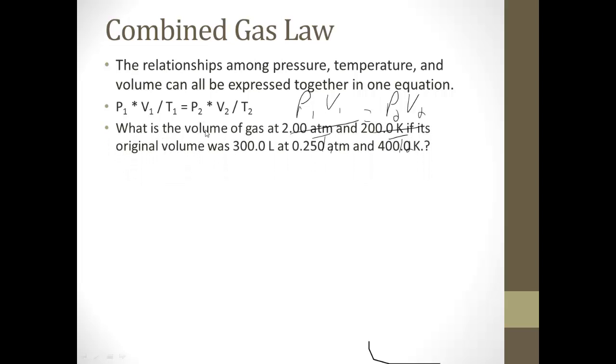So let's give this an example. What is the volume of gas at 2 atmospheres and 200 kelvins if its original volume was 300 liters at 0.250 atm and 400 kelvins? So now we have all of them in the mix, so we have to say P1 equals V1 equals T1 equals P2 equals V2 equals T2 equals. P1, pressure 1, so the original was 0.250 atmospheres. Original volume 300 liters. Original temperature 400 kelvins. What is the volume? So we're solving for volume at 2 atmospheres, 2.00 atm, and 200 kelvins, 200.0 kelvins.